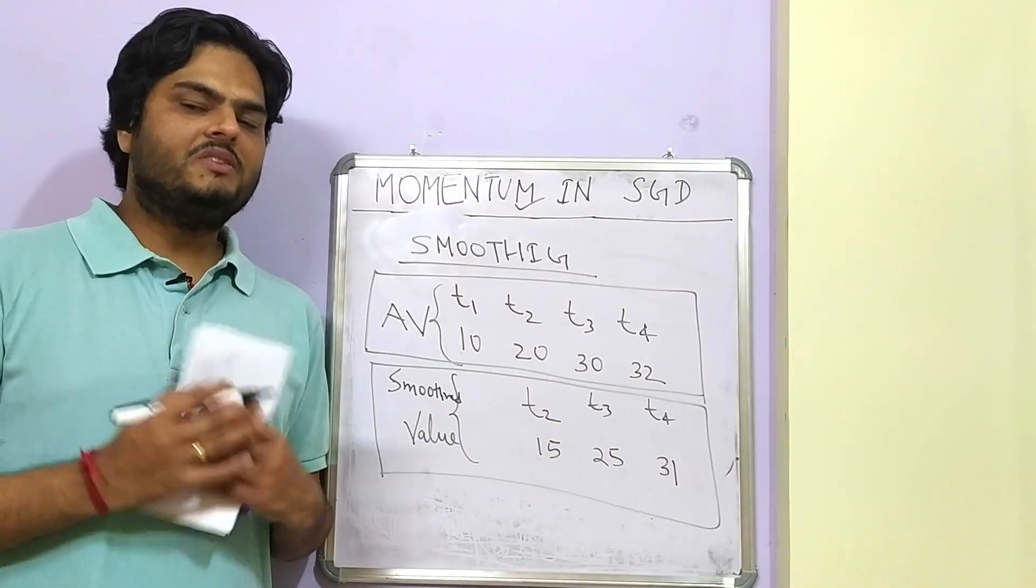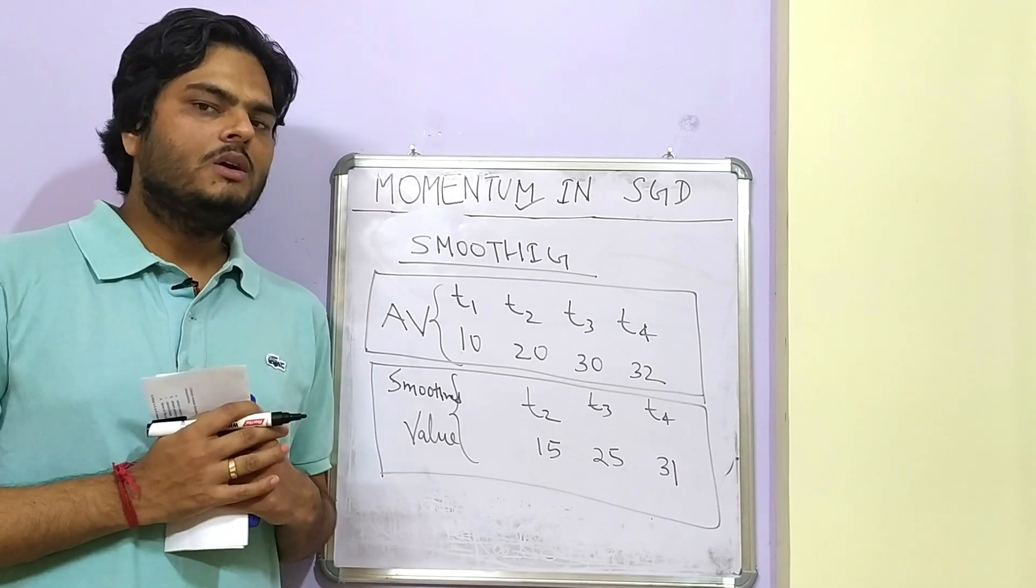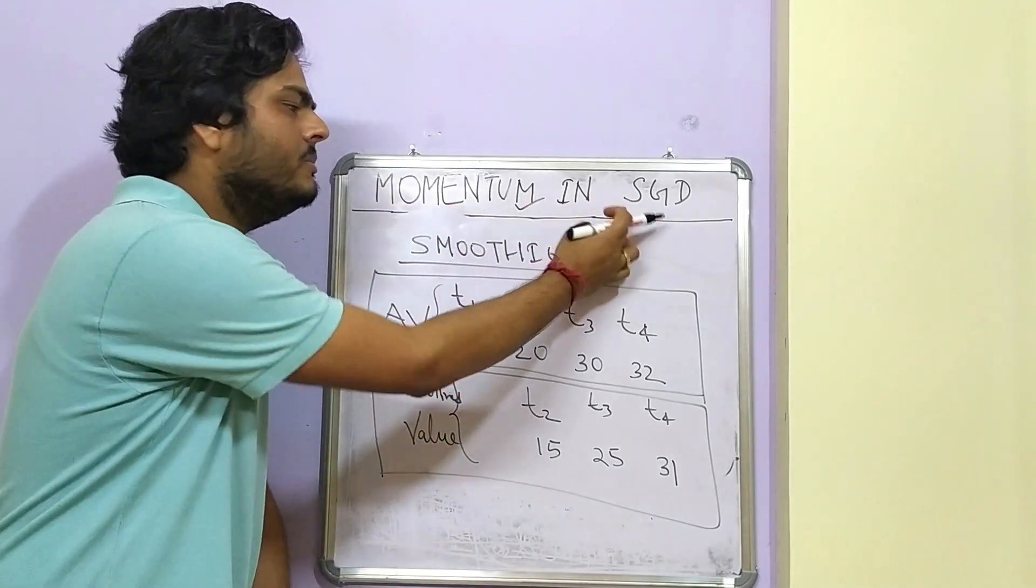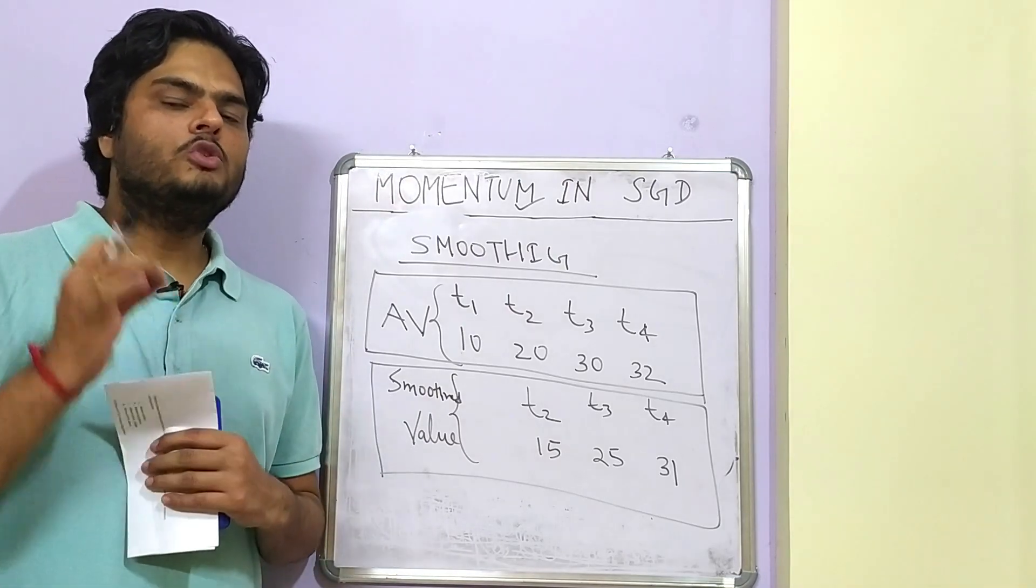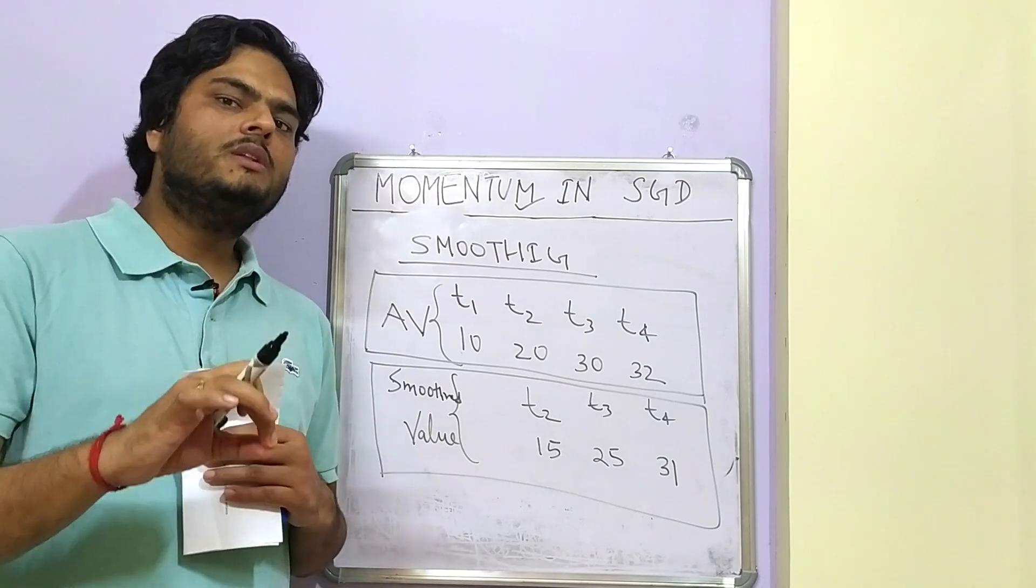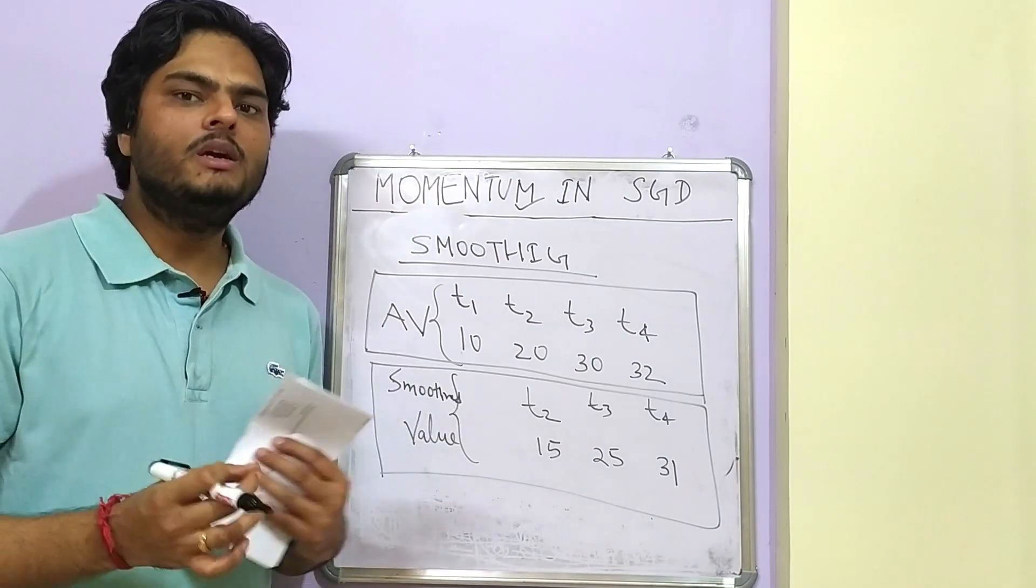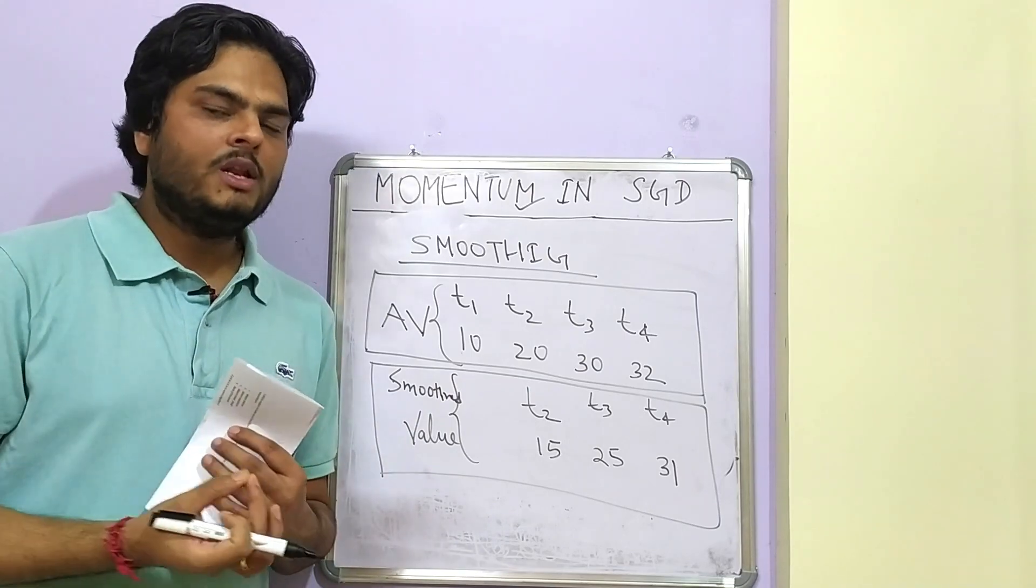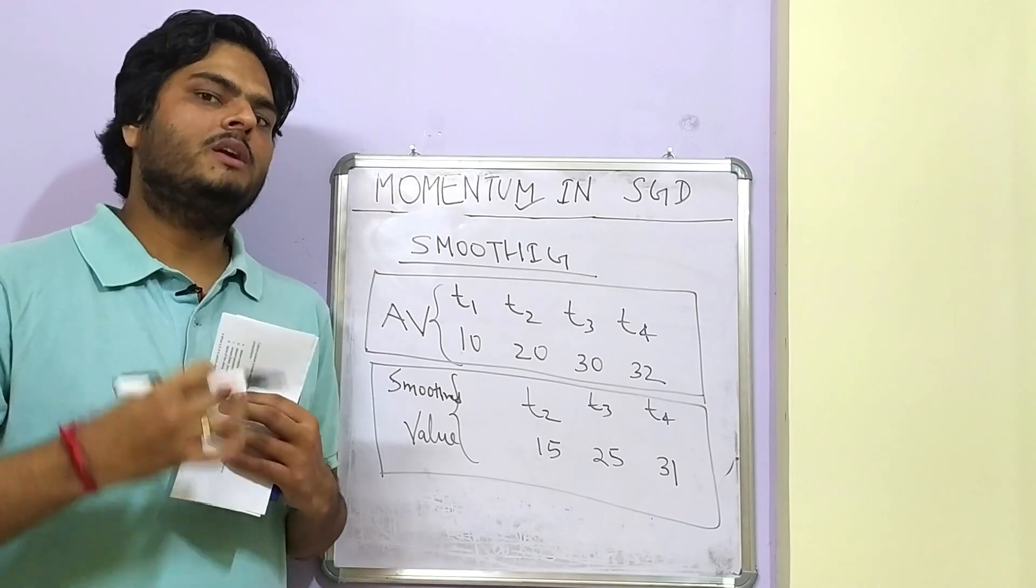Welcome to Unfold Data Science friends. This is Aman here and I am a data scientist. In this video we will learn what is the concept of momentum in stochastic gradient descent. So why is momentum important? Tomorrow when you implement a deep learning model, you will have to put the momentum parameter. You should know what is momentum mathematically and what should be the optimal value of momentum so that your model works good. That is what we will learn in this video.